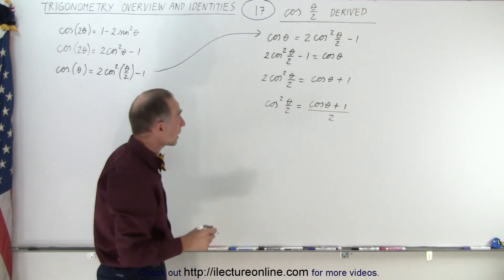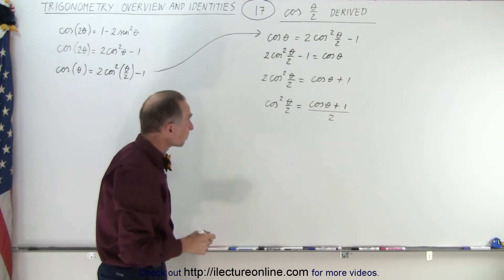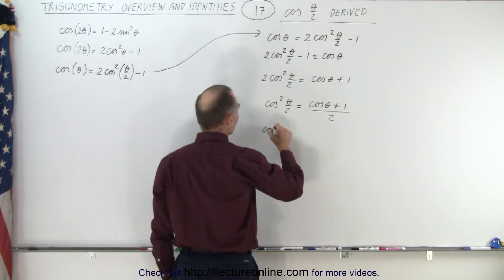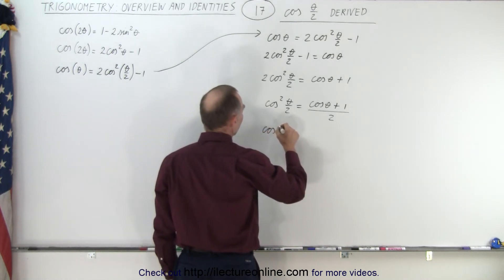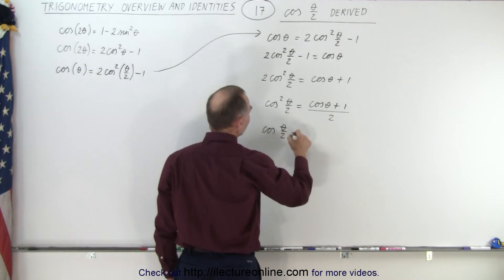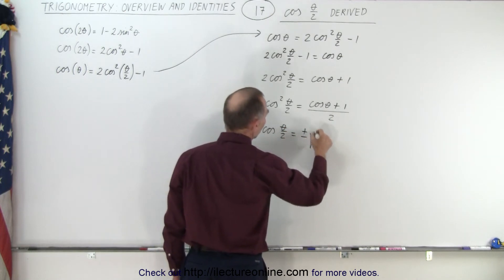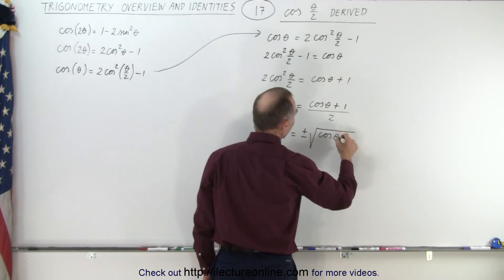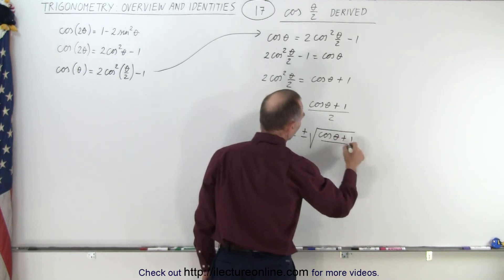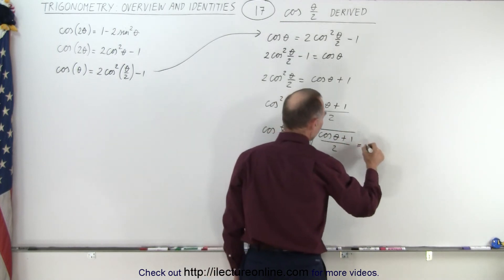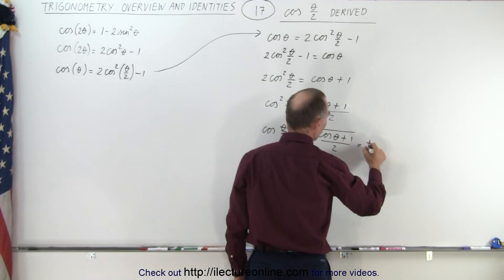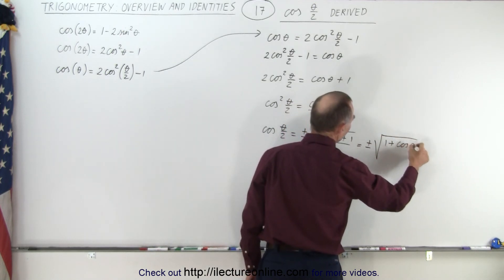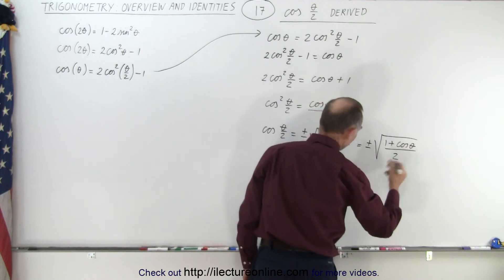Finally, we take the square root of both sides. So this can be written as the cosine of theta over 2 is equal to plus or minus the square root of cosine of theta plus 1, over 2. Or equivalently, this can be written as plus or minus the square root of 1 plus the cosine of theta, divided by 2.